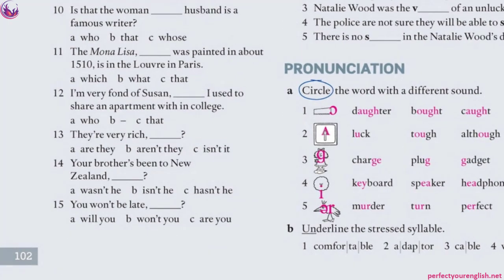Number 11: 'The Mona Lisa, which was painted in about 1510, is in the Louvre in Paris.' A is correct. This is a non-defining relative clause between two commas — it can be removed and the sentence is still correct. We don't use 'that' in non-defining relative clauses. 'What' is also wrong. For objects in relative clauses, we use 'which' or 'that' depending on the type; here it's 'which.'